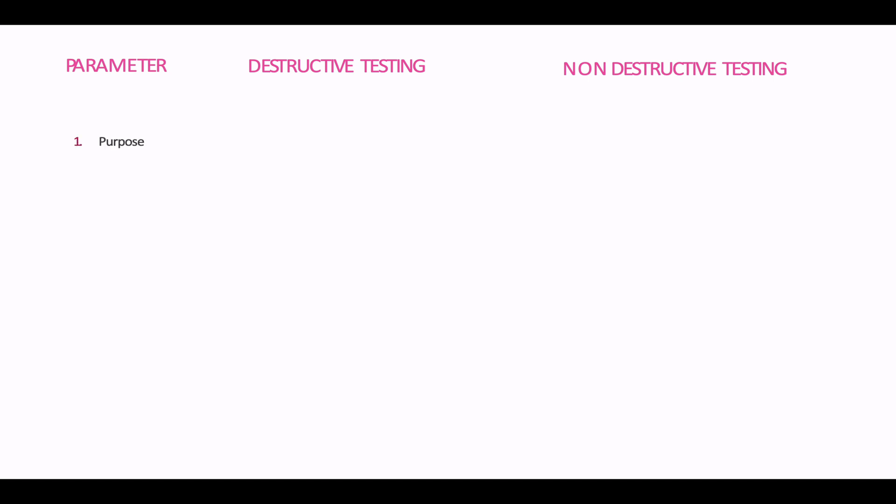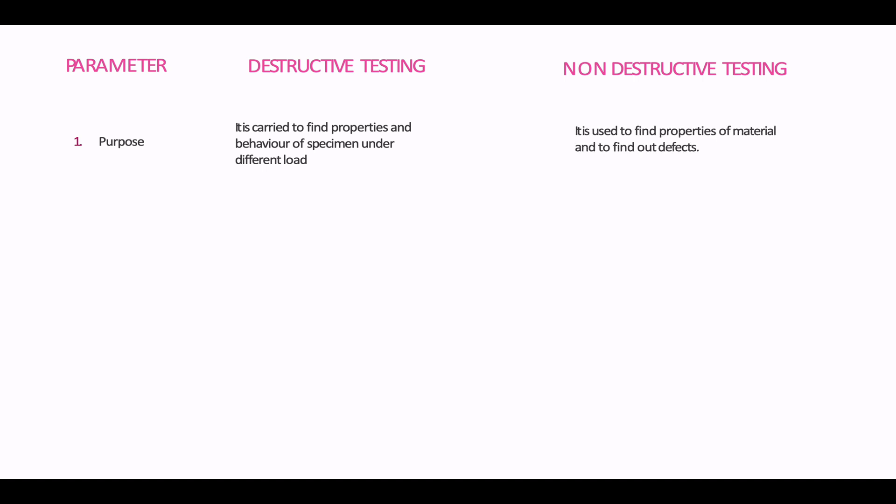Now let us discuss the difference between destructive testing and non-destructive testing based on a few parameters. In terms of purpose, destructive testing is carried out to find the properties and behavior of a specimen under different loading conditions. At the same time, non-destructive testing is used to find properties of a material and to find out its defects, with more focus on finding defects rather than the ability to carry loads.